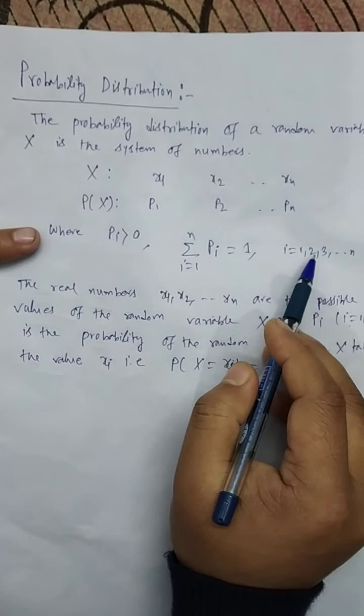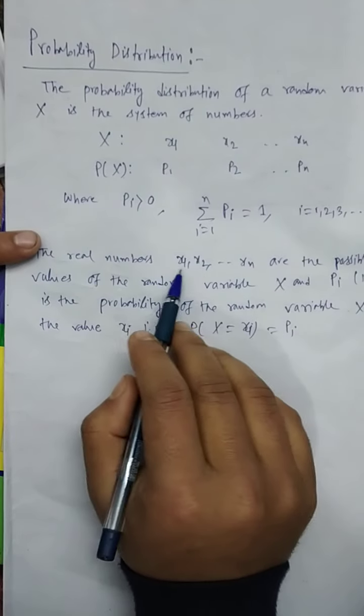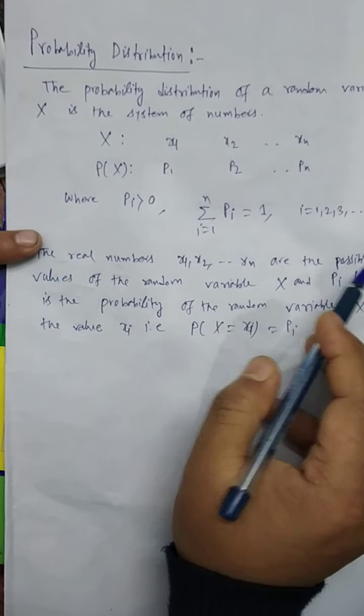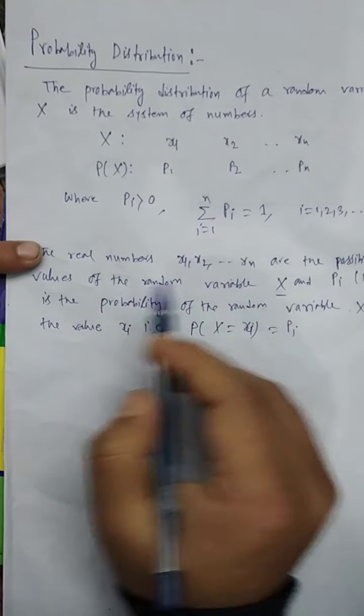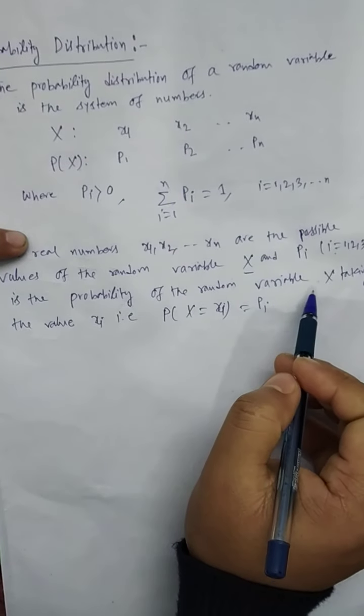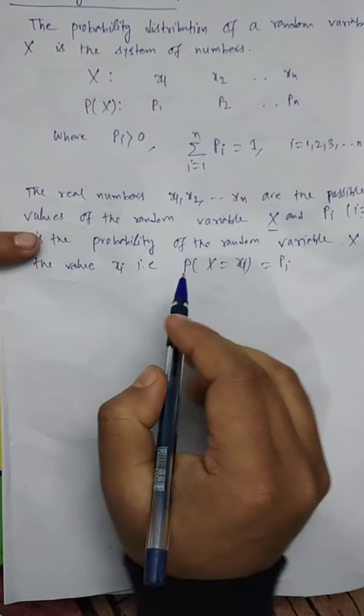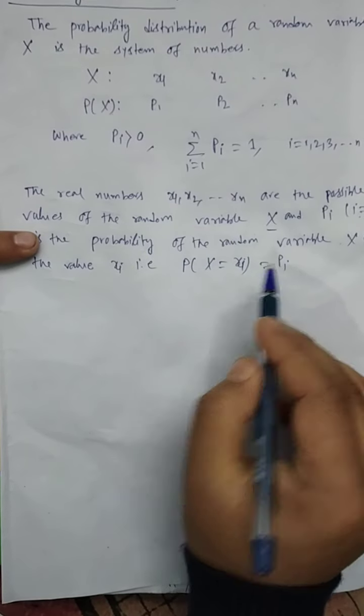i equals 1, 2, 3, ..., n. So the real numbers X1, X2, ..., Xn are the possible values of the random variable X, and Pi is the probability of the random variable X taking the value Xi, that is P(X = xi) = Pi.